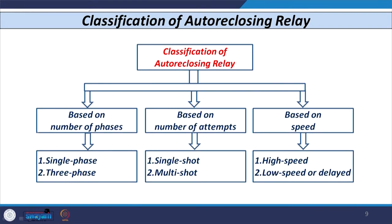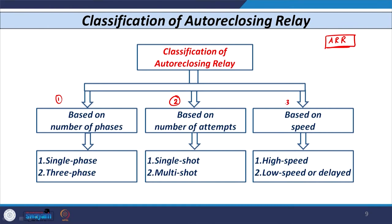Auto reclosers are denoted by the term ARR — Auto Reclosing Relay. They can be classified based on three criteria: first, the number of phases, whether single phase or three phase; second, the number of attempts, whether single or multiple reclosing attempts; and third, the speed, whether high-speed or low-speed (delayed) reclosing.